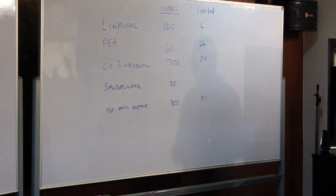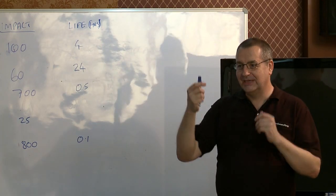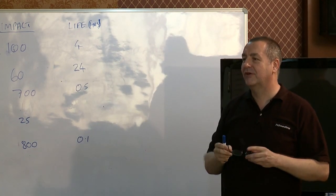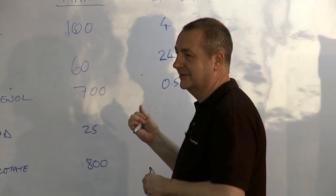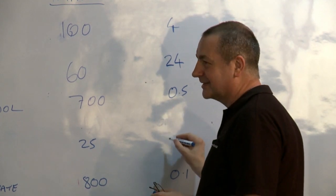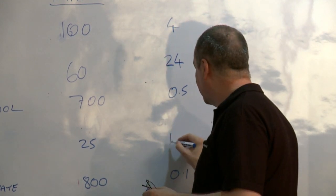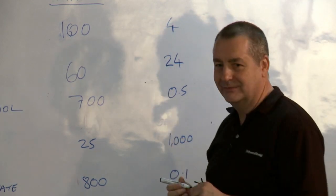Isolamyl acetate was 0.1. And sandalwood, I tried this 40 years ago with sandalwood to find out how long it lasts on the smelling strip and I gave up after 6 months. So we can assume that it's something like, if you say it's a thousand hours.